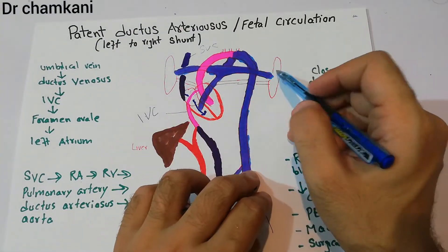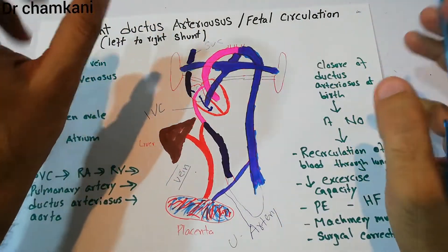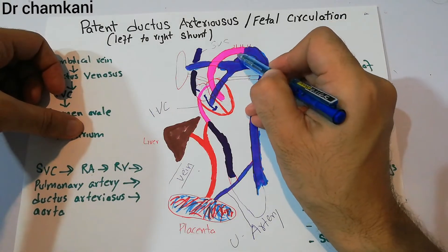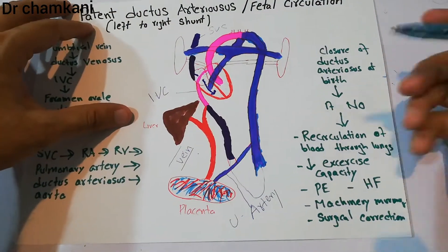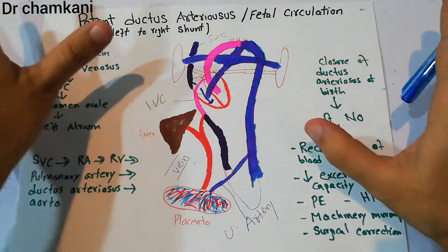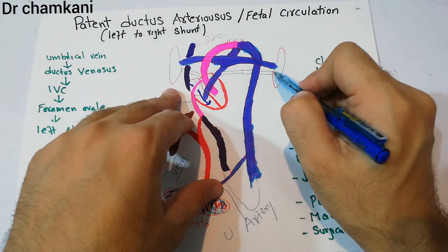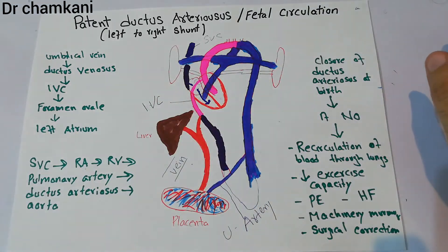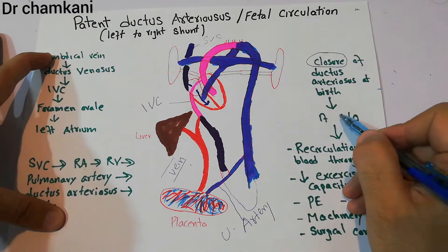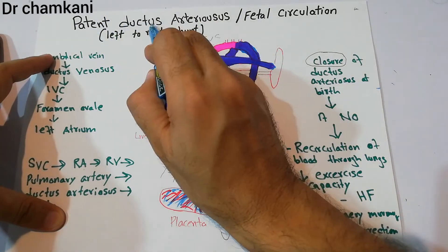Normally the lungs are collapsed before birth, but as soon as the baby is born and starts crying and breathing, the lungs begin to expand and closure of the ductus arteriosus occurs. When the ductus arteriosus closes, blood begins to flow into the lungs and normal adult circulation starts. But if this closure does not occur, the shunt remains open and it is labeled as patent ductus arteriosus.